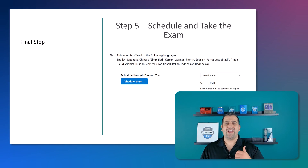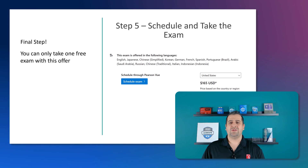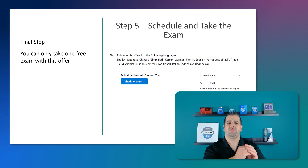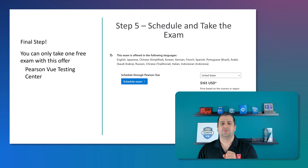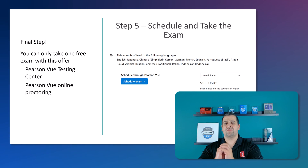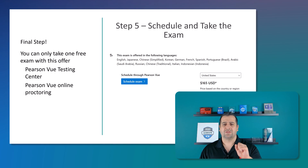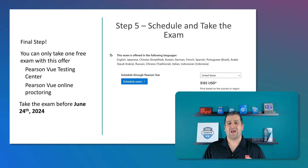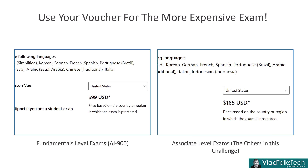The final step is to schedule and take the exam. Remember you can only take one exam from the list with this offer, at either a Pearson VUE testing center or via Pearson VUE online proctoring — so you can take it from home, but it will be proctored. You need to take the exam before June 24th, 2024. Also, if your goals include both the AI-900 and an advanced exam, use your voucher for the more expensive associate or expert level exam to save more money.